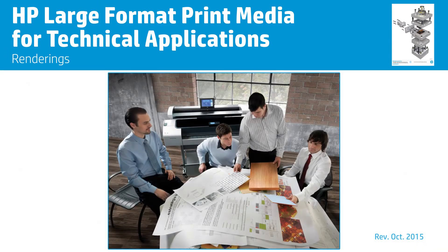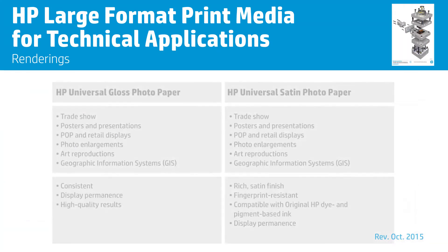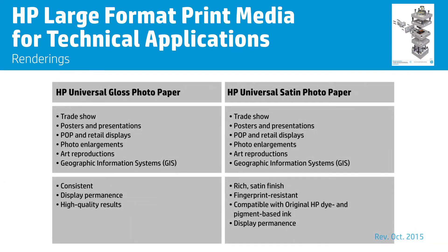When some firms present final renders to their clients, they may provide prints on media like HP Super Heavyweight Plus Matte paper, since it takes a higher ink load and can produce a more vivid image. To that end, photographic papers like HP Universal Gloss or HP Universal Satin Photo Paper are good choices.